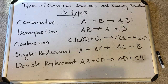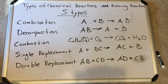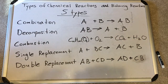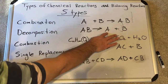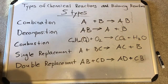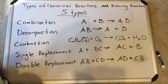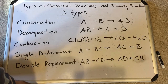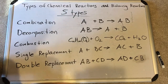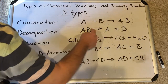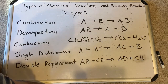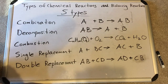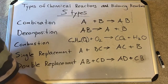Decomposition is the exact opposite of combination. We have a large compound on the reactant side and it breaks apart into its pieces — its constituents. Maybe the cation (the positive part) and the anion (the negative part) are split. That's a decomposition reaction: we have more objects on the product side than on the reactant side.